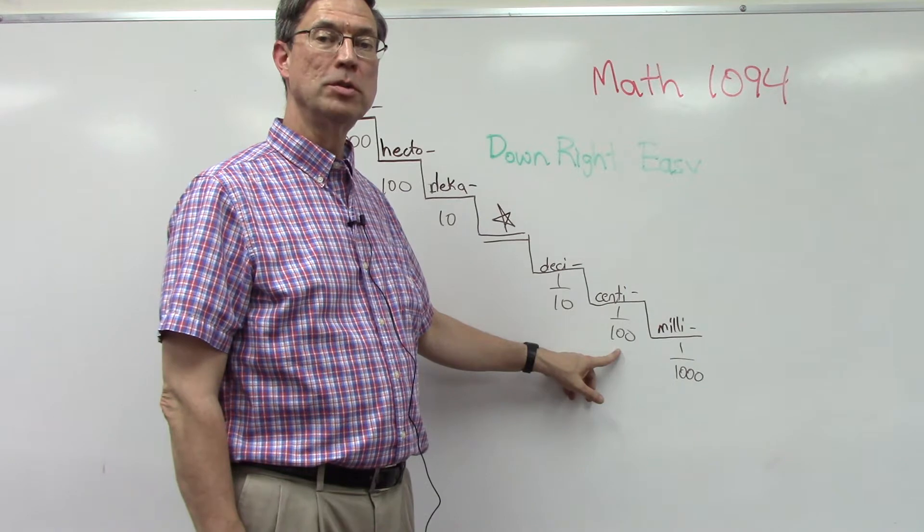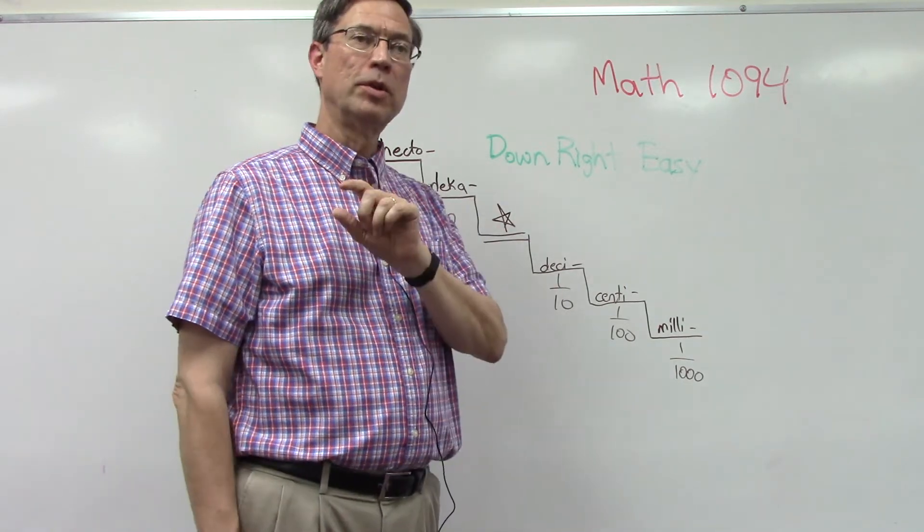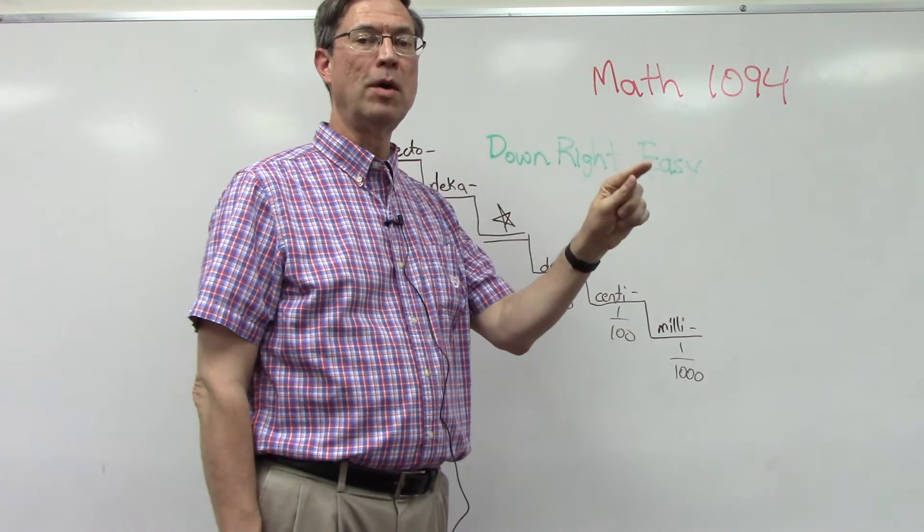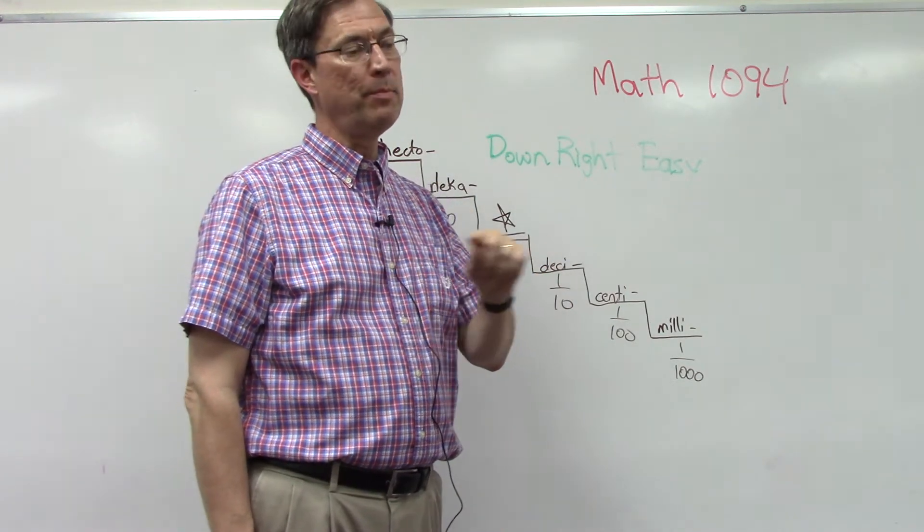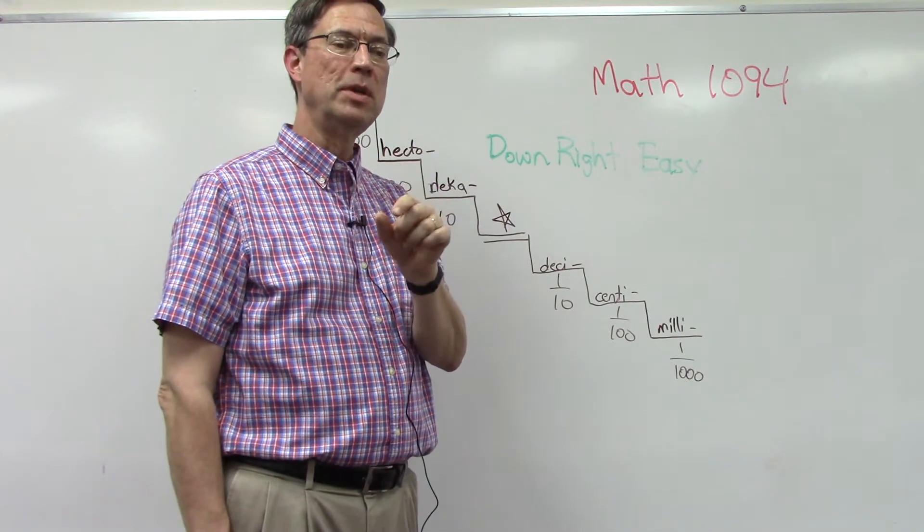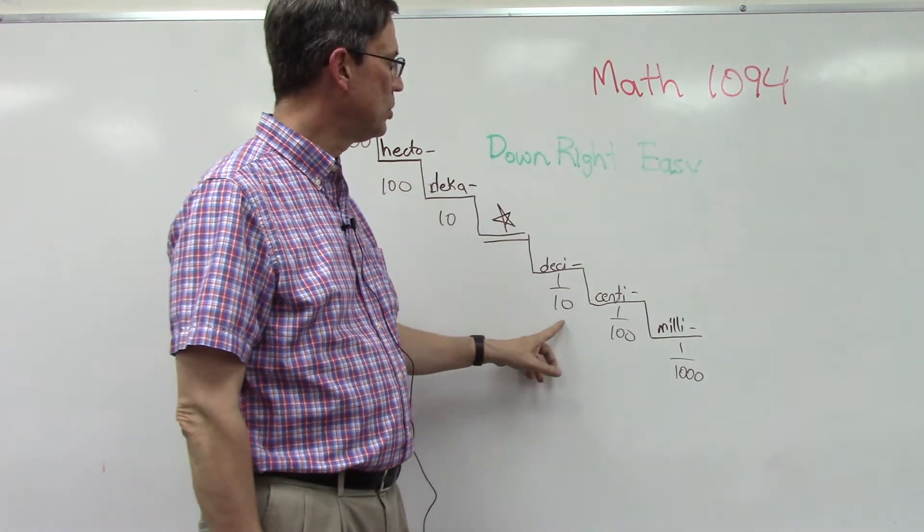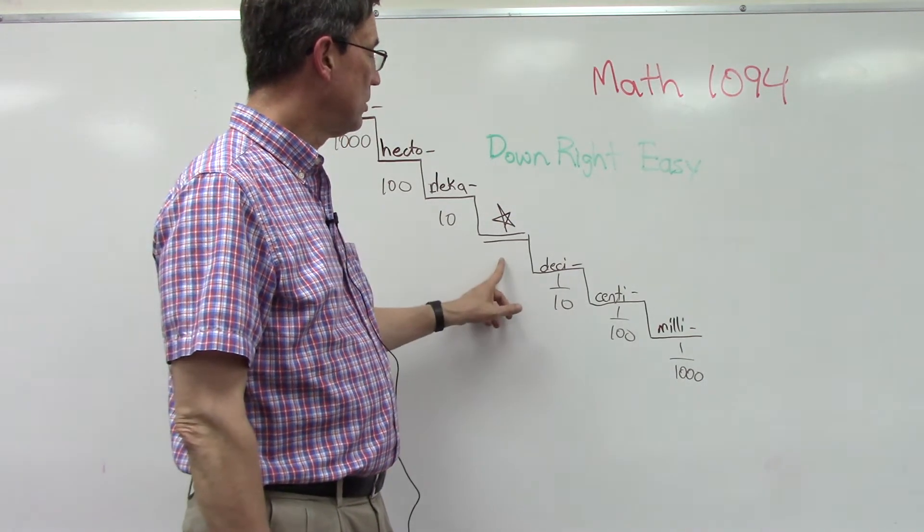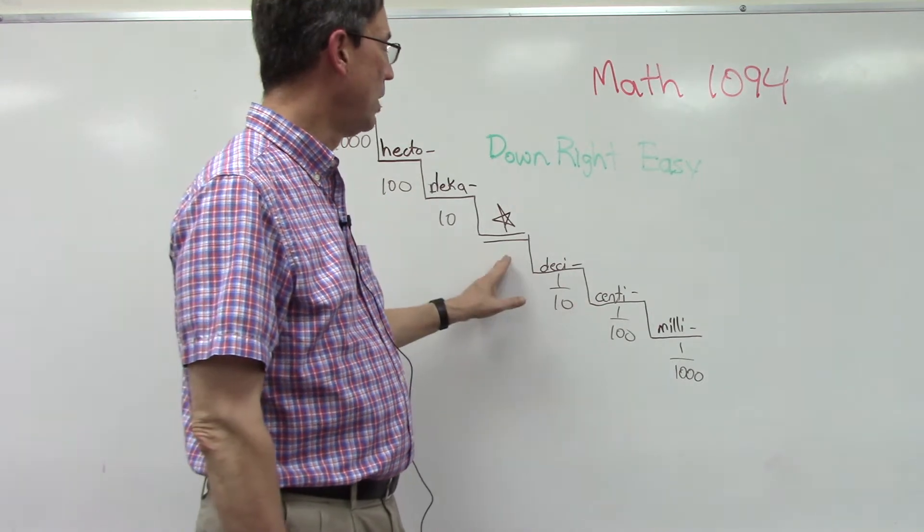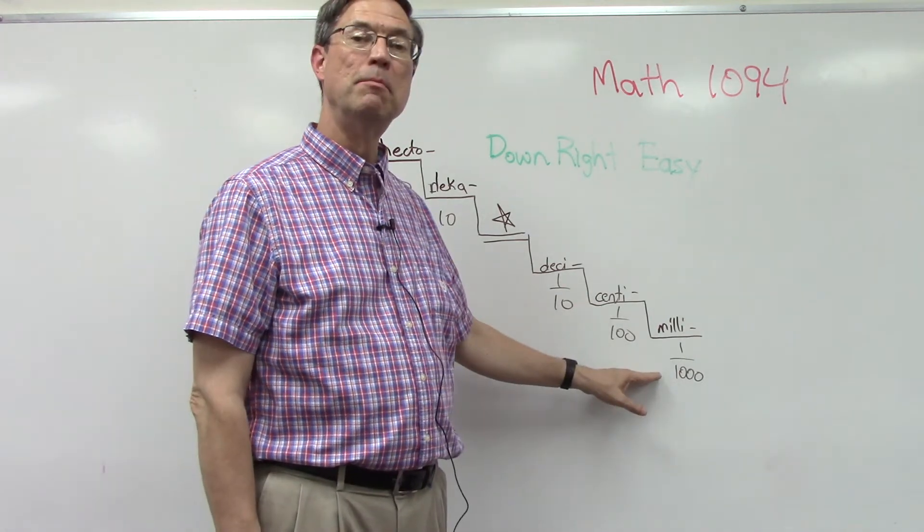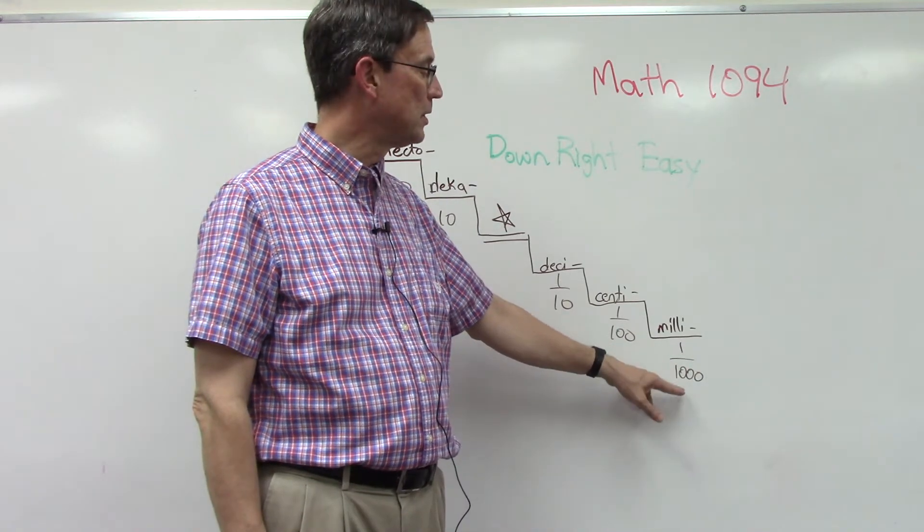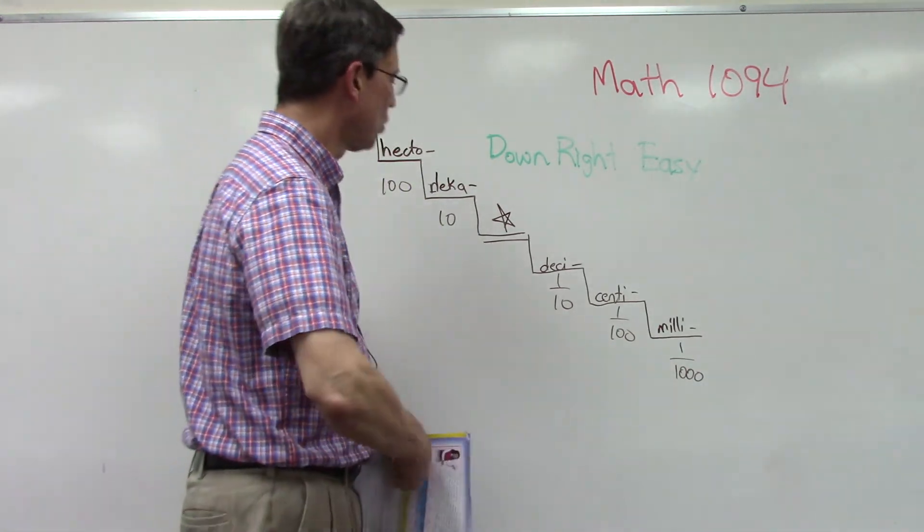Then each decimeter can be divided 10 times into centimeters. Those of us here in the US are familiar with looking at a ruler—a lot of times on one side it'll have inches 1 through 12, and then on the bottom might be the metric. About two and a half centimeters equals an inch. A hundred centimeters equals one meter, and then millimeters.